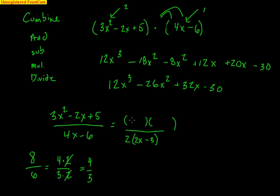3x and x makes the 3x squared. A 1 and a 5 can make the 5. If I have a 15x on the outside and a 1x, it's not going to get me what I need. Let me try the 5 right here and the 1 right here.